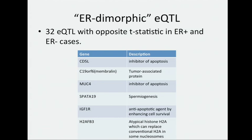The last thing I wanted to talk about were the ER dimorphic EQTLs. Like I said earlier, we ran the EQTL analysis in ER-positive alone and ER-negative alone, as well as with ER as a covariate. We found 32 EQTLs with an opposite sign of the interaction in ER-positive and ER-negative. These are the six genes which were the transcripts from these EQTLs, and several of them seem to have roles in apoptosis, which I think warrants further investigation.